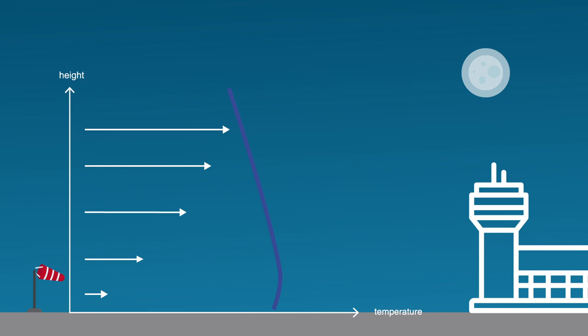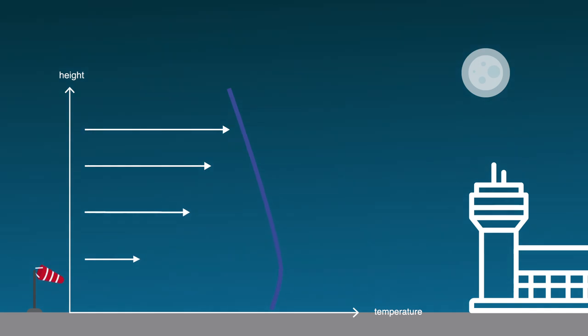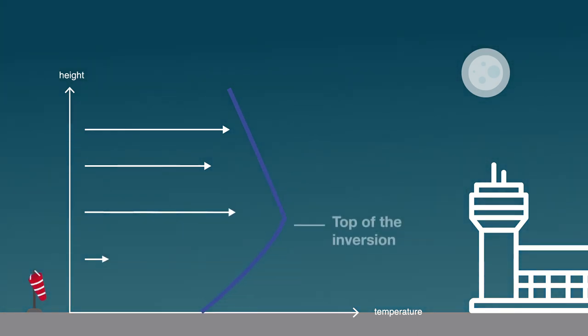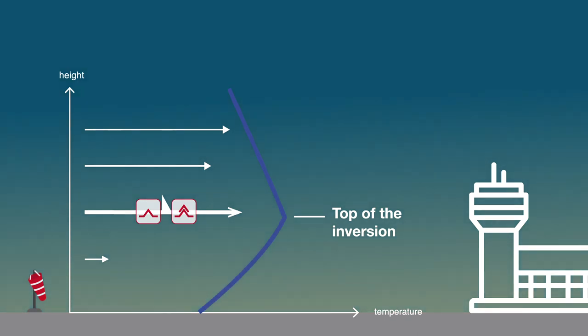The height of the temperature inversion increases as the ground temperature decreases throughout the night. Another effect of this inversion is a reduction in wind velocity towards calm conditions close to the ground. Meanwhile, at the top of the inversion, we can see an increase in wind velocity that may be stronger than the synoptic wind. These conditions are favourable for the creation of low-level jets.